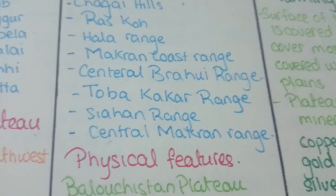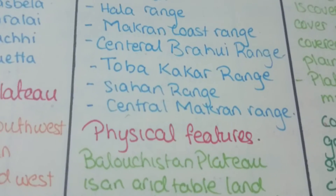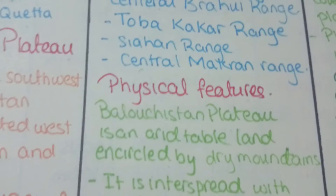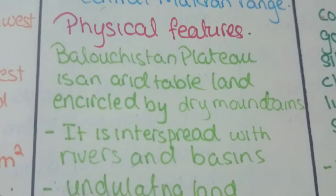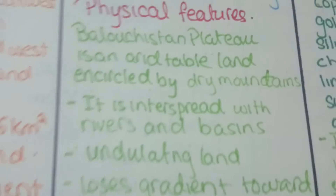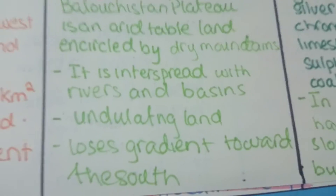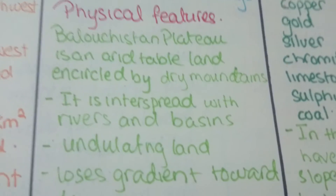Major ranges of the Balochistan Plateau are the Chaghai Hills, Raskoh, Hala range, Makran Coast range, Central Brahui range, Toba Kakar range, Siyahan range, and Central Makran range.